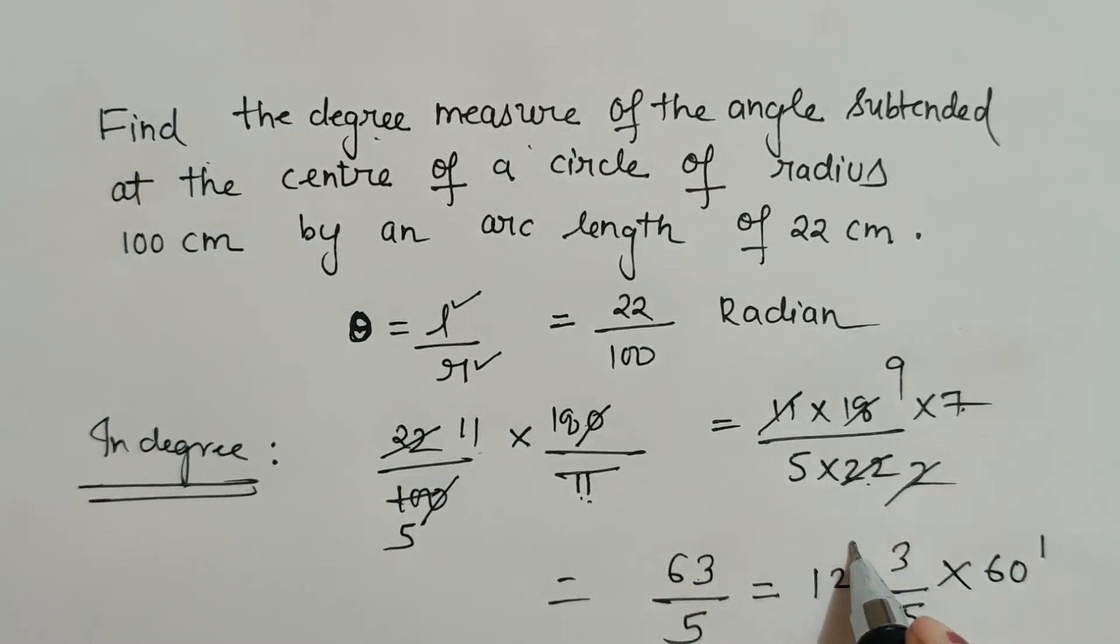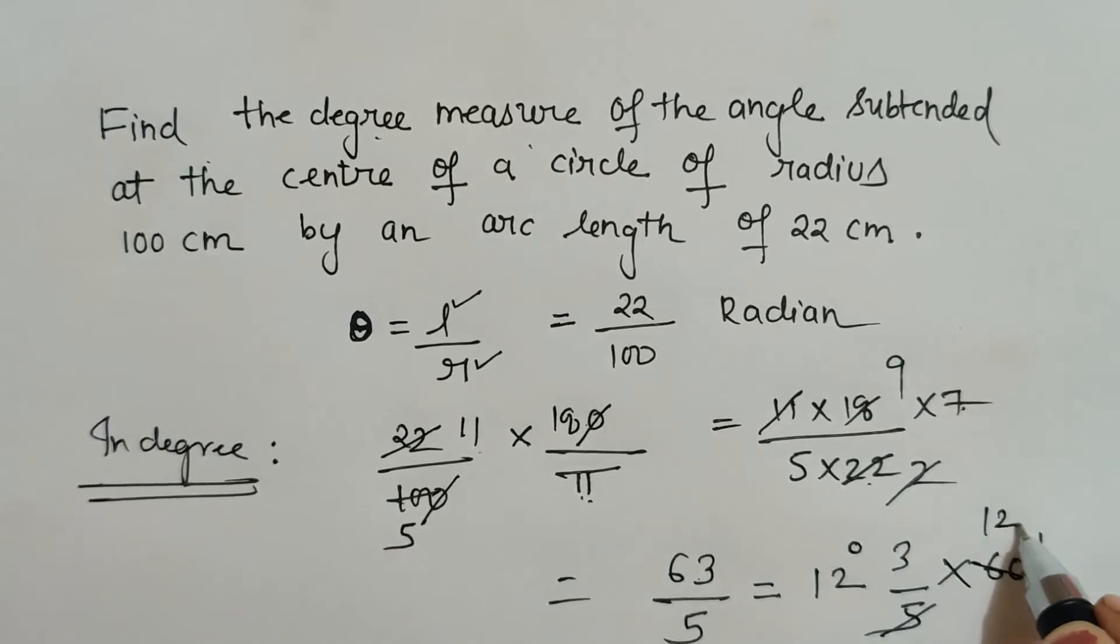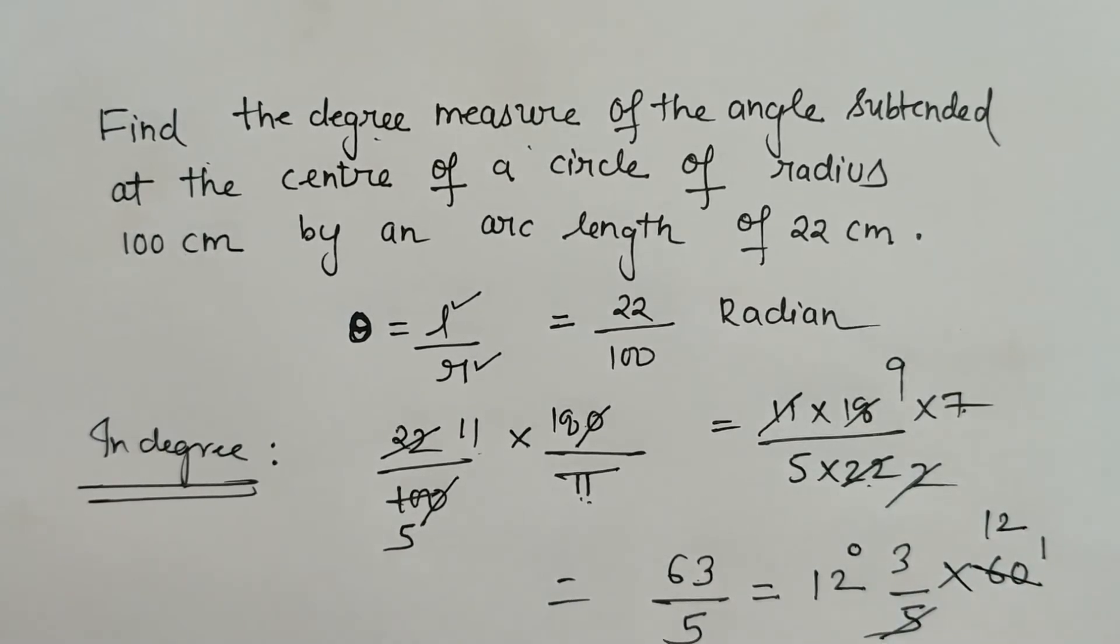Because this 12 is in degrees and 3 by 5 is also in degrees, we will further simplify it. Multiply it by 60 because 1 degree is 60 minutes. So 5 12s are 60. Now 12 degrees and 3 into 36, 36 minutes.